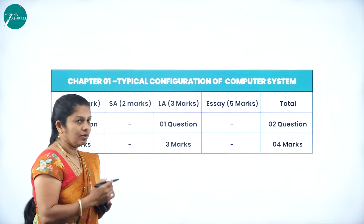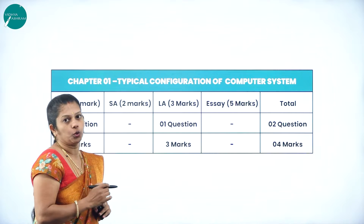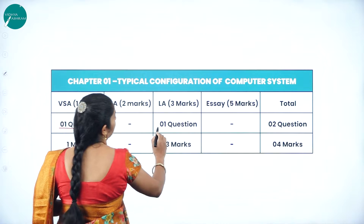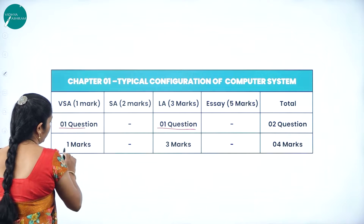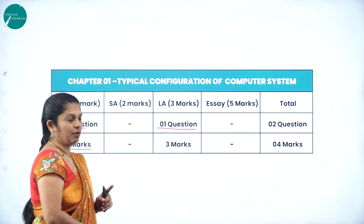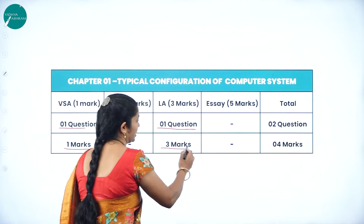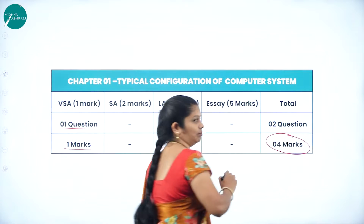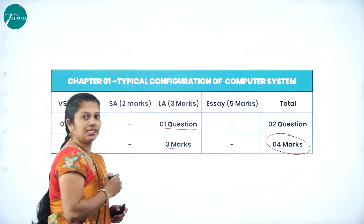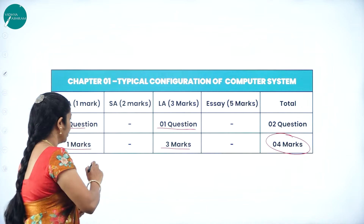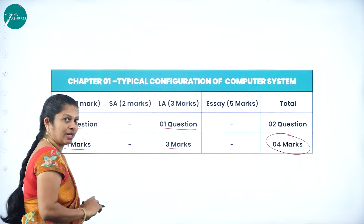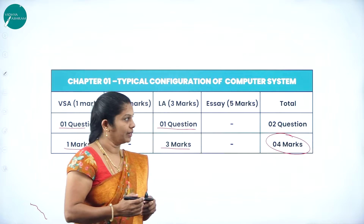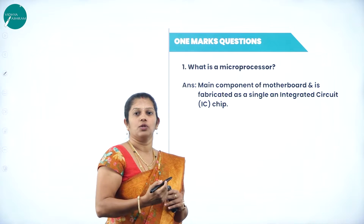In the annual exam, from this chapter you will get two questions. In Part A, one question, and in Part C, one question. In Part A you will get one mark, and in Part B one question carrying three marks — totally four marks weightage from this chapter. These are very simple questions.